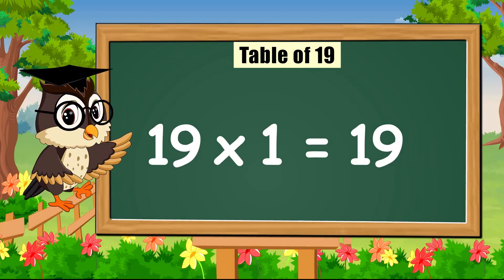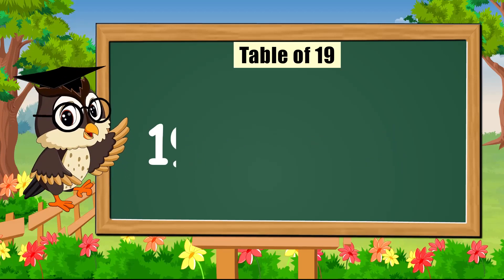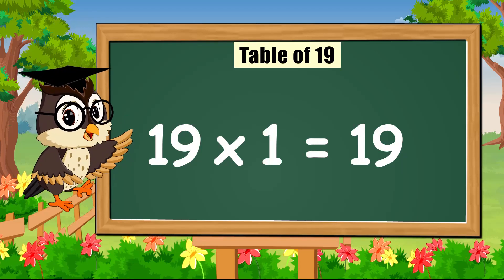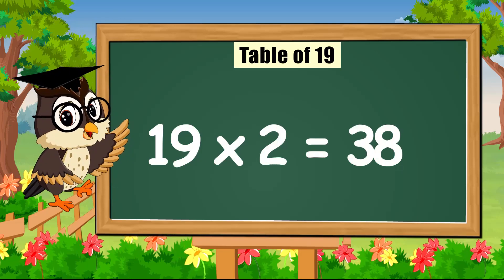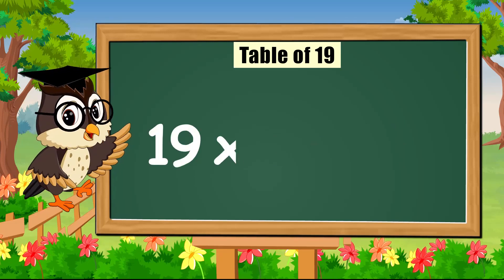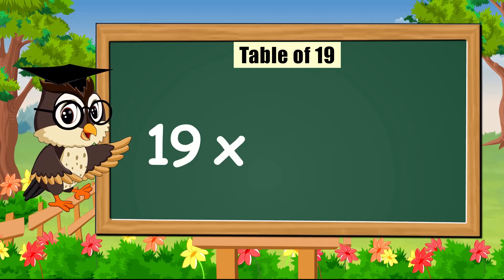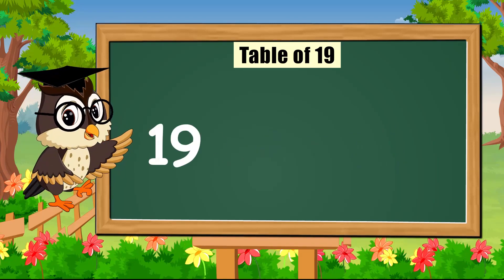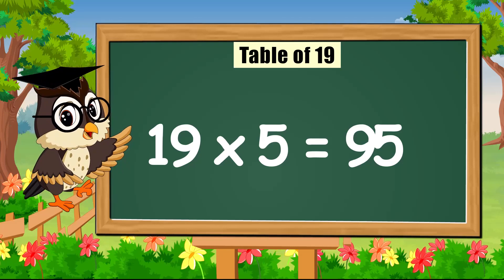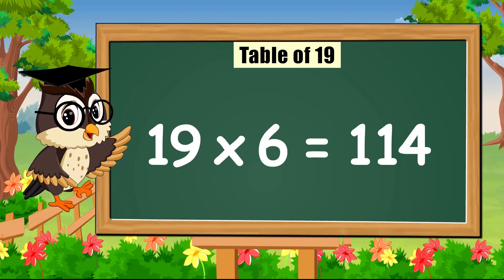Hello everyone, we are gonna learn today. Sing with me the table of nineteen. Come on! Nineteen times one is nineteen. Nineteen times two is thirty-eight. Nineteen times three is fifty-seven. Nineteen times four is seventy-six. Nineteen times five is ninety-five. Nineteen times six is a hundred and fourteen.